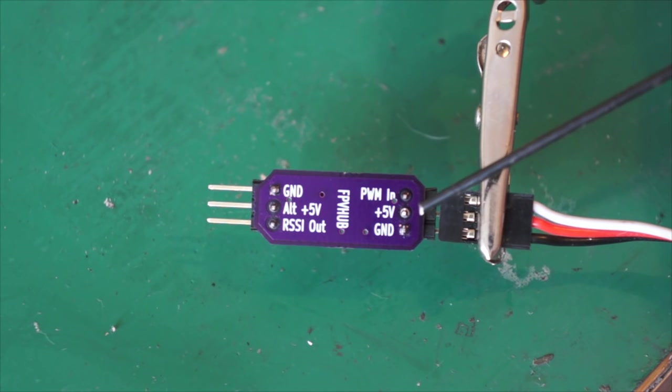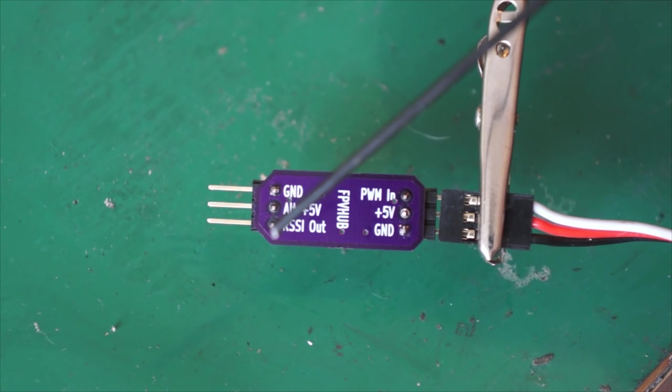On the output side, we have a ground pin. Some OSDs require a ground pin to the RSSI, but most don't. There's an alternative 5-volt pin to power it from the other side - in most cases this won't be needed. Then we have the RSSI output pin. This analog output will go to your OSD RSSI input pin and enable you to calibrate the RSSI and show 0 to 100 percent.